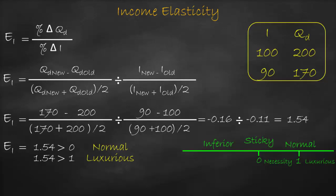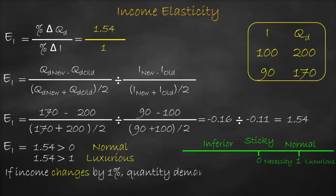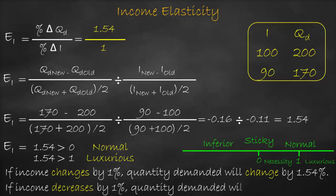We interpret income elasticity as percent change in quantity demanded divided by percent change in income, which equals 1.54 divided by 1, equal to 1.54. This means if income changes by 1 percent, quantity demanded will change by 1.54 percent, or if income decreases by 1 percent, quantity demanded will decrease by 1.54 percent.